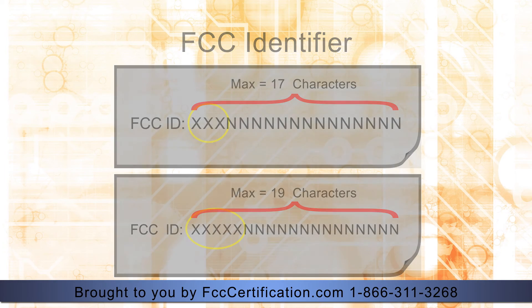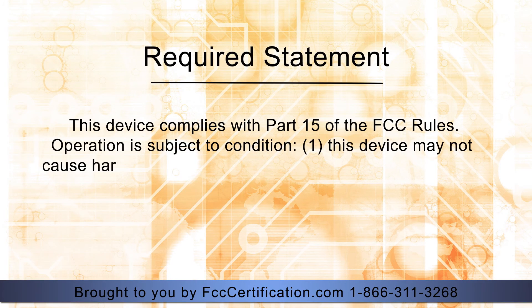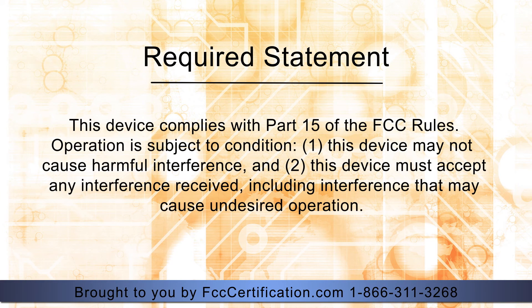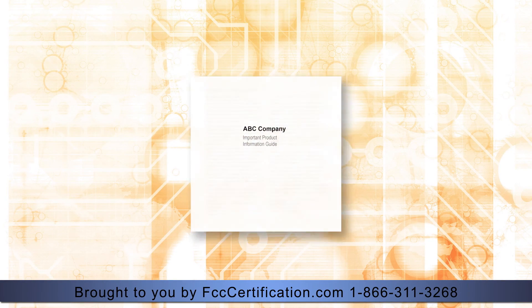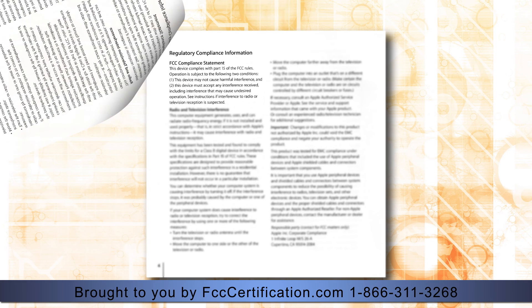In addition to the FCC ID, the following statement shall also be placed on the device. Additional statements and information may be required for compliance to specific or general rule parts. If the labeling area is considered too small and therefore it is impractical to display the compliance statement, then the statement may be placed in the user manual or product packaging. However, the device must still be labeled with the FCC ID.